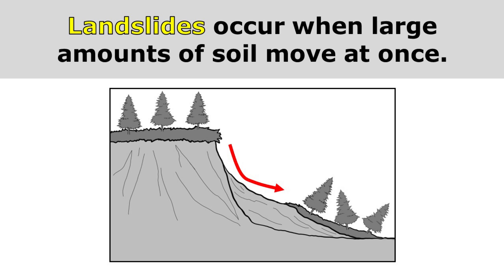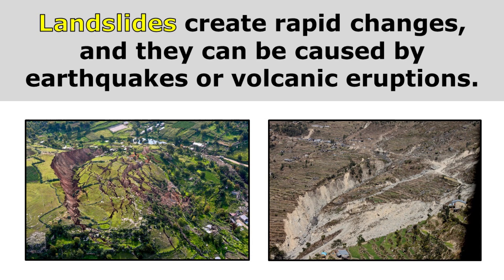Landslides occur when large amounts of soil move at once. Landslides create rapid changes, and they can be caused by earthquakes or volcanic eruptions.